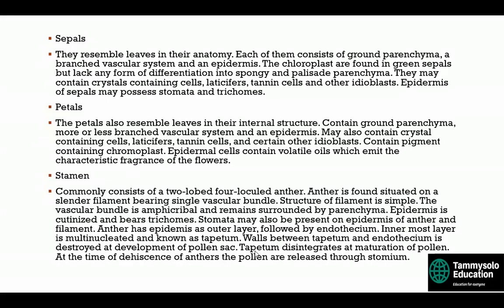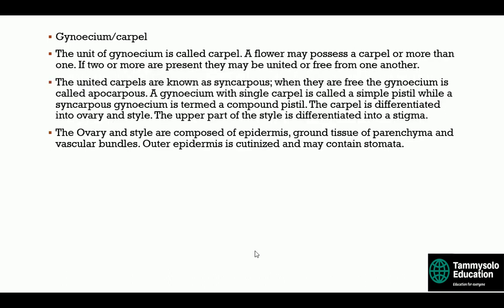The anther has an epidermis as the outer layer, followed by the endothecium. The innermost layer is multinucleated and known as the tapetum. The wall between the tapetum and endothecium is destroyed during development of the pollen sac. The tapetum disintegrates at maturation of pollen. At the time of dehiscence of the anther, pollen is released through the stomium.